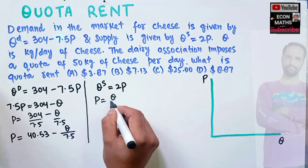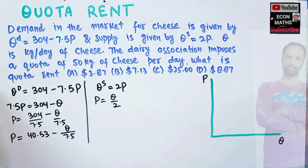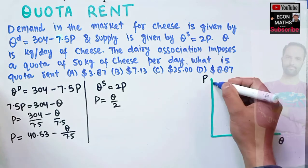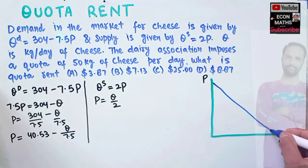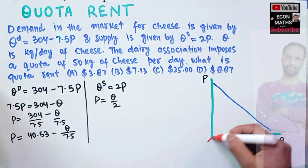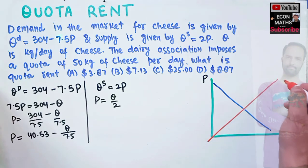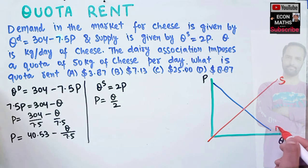From the supply function, p = q/2. We draw the demand function which is downward sloping and the supply function which is upward sloping.